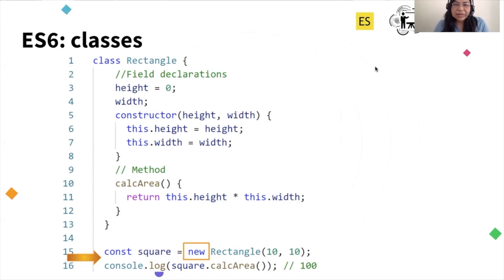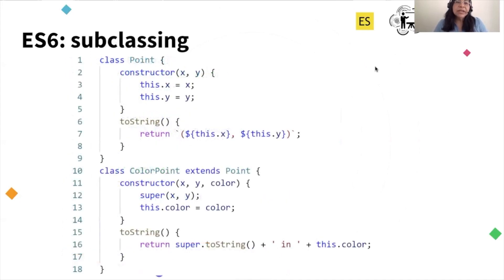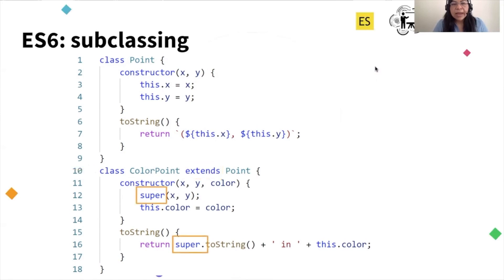I also mentioned that in JavaScript they also have inheritance. So here I am declaring a parent class called Point. And here I'm declaring a child class that also uses the keyword extends to use the Point class as a parent. Similar to what we have in Apex, if I use the keyword super, I can access the constructor of the parent, and also the methods of the parent.